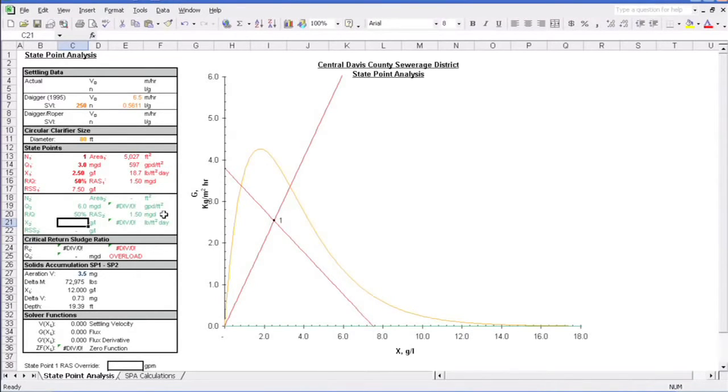Let's clear the second state point values now so we can focus on our single state point. And as you've probably noticed, this model adjusts the graph automatically and immediately, allowing us to quickly evaluate how things are going. Well, we see that in this case, things are going quite well. Both the state point and the underflow line fall under the settling curve. Man, life is good.